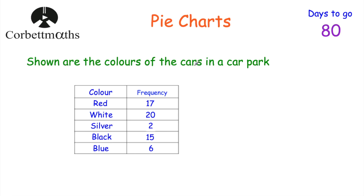Now you can have a bit of practice. I've got a table showing the colours of cars in a car park: red, white, silver, black and blue, with frequencies. What I'd like you to do is work out the size of each angle for drawing a pie chart — what would the angle be for red, white, silver, black and blue? And if you have a protractor and compass, feel free to draw the pie chart, or just work out the angles.